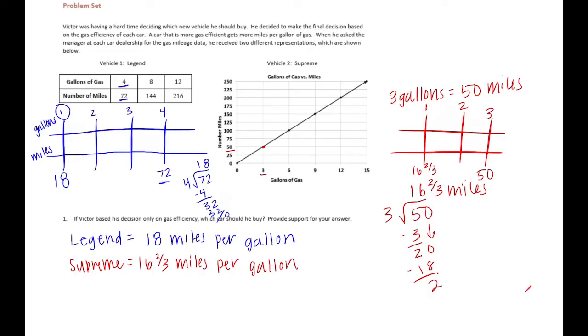If he's basing it on gas efficiency, he should buy the Legend. The Supreme, he's going to get further—it gets more miles per gallon, so he's going to be able to travel further. So Victor should buy the Legend.